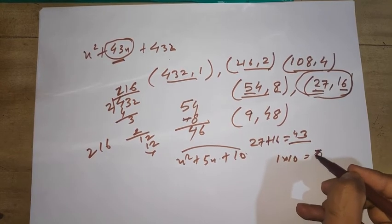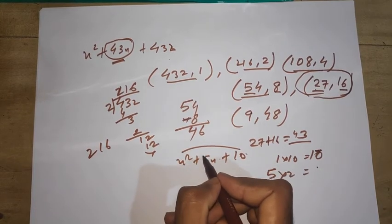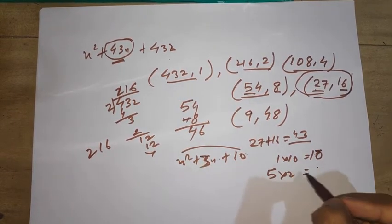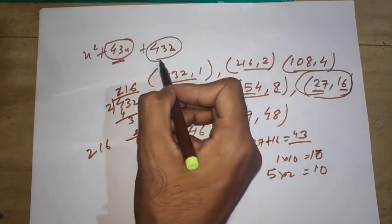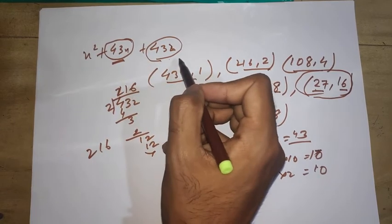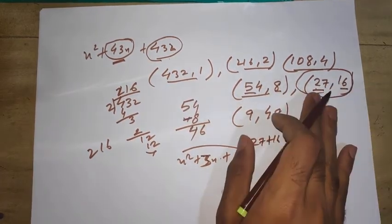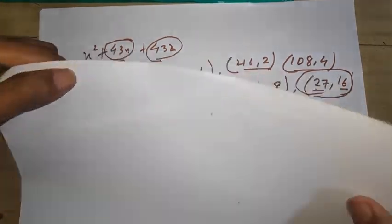Earlier we used to find factors like suppose x² + 5x + 10, we'd multiply 1 times 10, then write factors like 5 times 2. But with a big number, we cannot do it properly. So I'm going to use this method - this is the most shortcut method you can try.